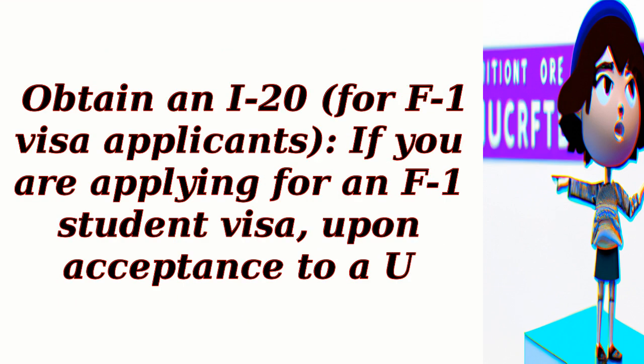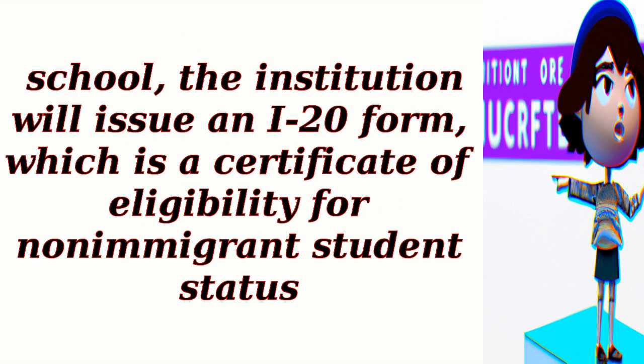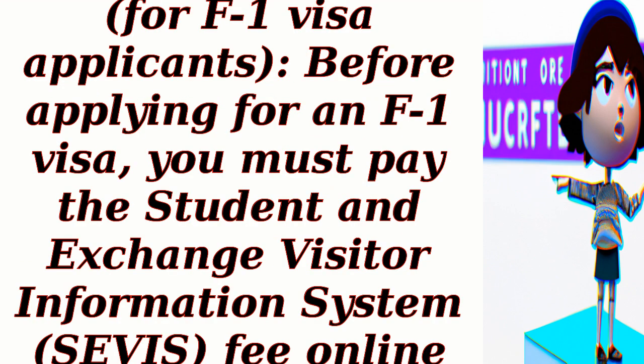Step 4: Obtain an I-20 for F1 visa applicants. If you are applying for an F1 student visa, upon acceptance to a U.S. school, the institution will issue an I-20 form, which is a certificate of eligibility for non-immigrant student status. Step 5: Pay the SEVIS fee. Before applying for an F1 visa, you must pay the Student and Exchange Visitor Information System (SEVIS) fee online and receive a receipt.